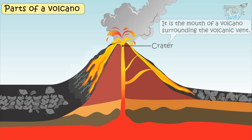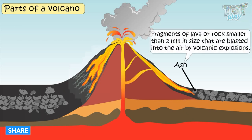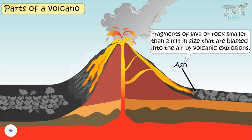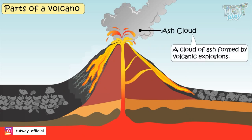Ash. Fragments of lava or rock smaller than 2 millimeters in size that are blasted into the air by volcanic explosions are called ash. Ash cloud. A cloud of ash formed by volcanic explosions is called an ash cloud.